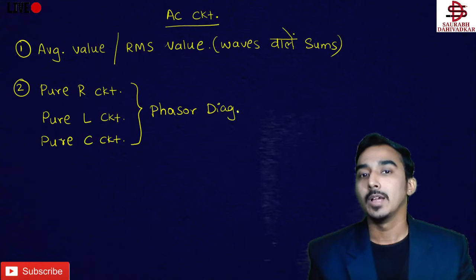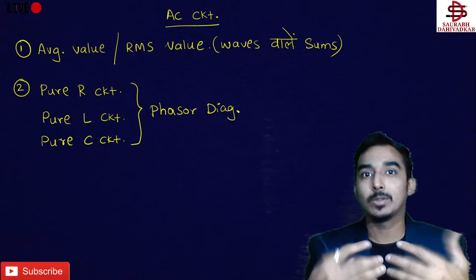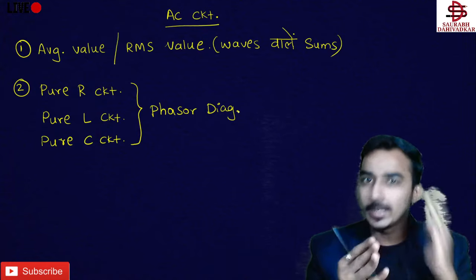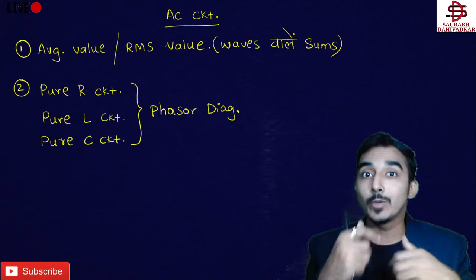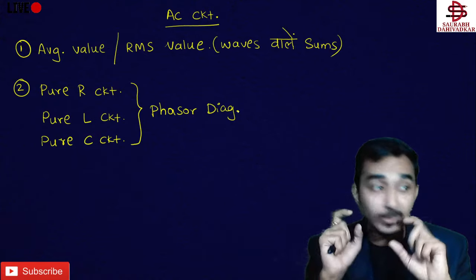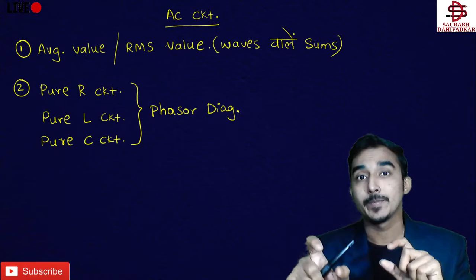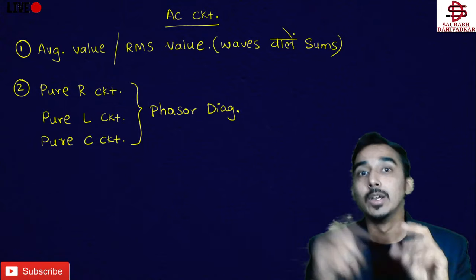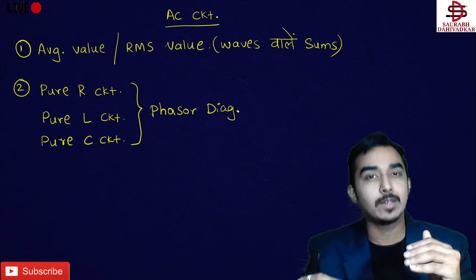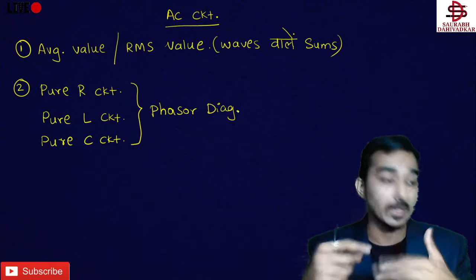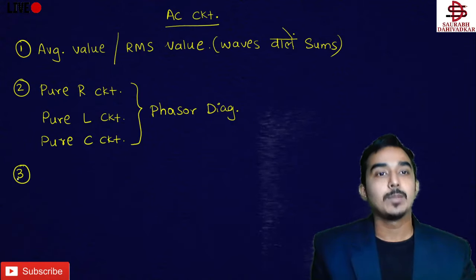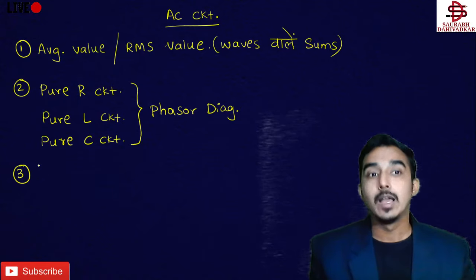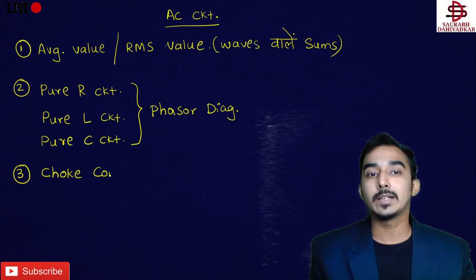Phasor diagram — बहुत लोगों को problem यही होती है कि phase क्या होता है यही नहीं पता. College में सुना होगा 'एक phase हो गया, दो phase हो गया' — अपने घर पे बोलते हैं 'अरे phase चला गया.' लेकिन phase exactly है क्या, यह जानना बहुत ज़्यादा ज़रूरी है. Phasor diagram pure resistor, pure inductor, pure capacitor circuits में पढ़ना पड़ेगा.